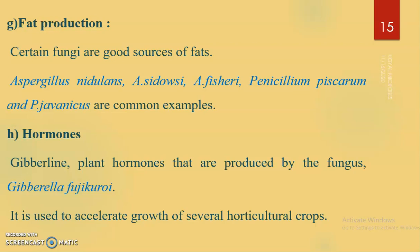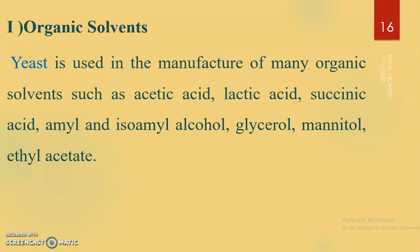Hormones: one example of a hormone produced by fungi is gibberellin. Gibberellin is a plant hormone produced by the fungus Gibberella fujikuroi, and it can be used to accelerate the growth of crops.